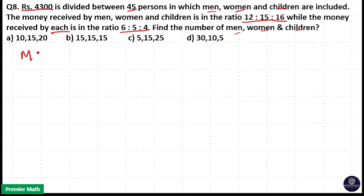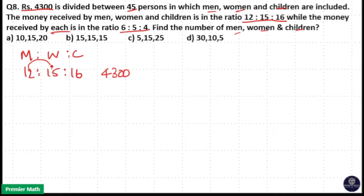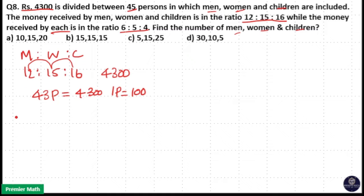Money received by men, women and children is in the ratio 12 is to 15 is to 16. Total money is 4300, and 12 plus 15 plus 16 equals 43 parts. So 43 parts equals 4300, meaning 1 part equals Rs. 100. Therefore, total money received by men is Rs. 1200, by women is Rs. 1500, and by children is Rs. 1600.